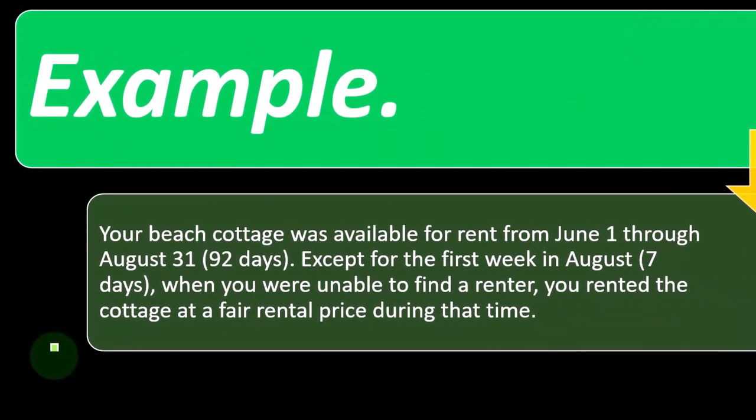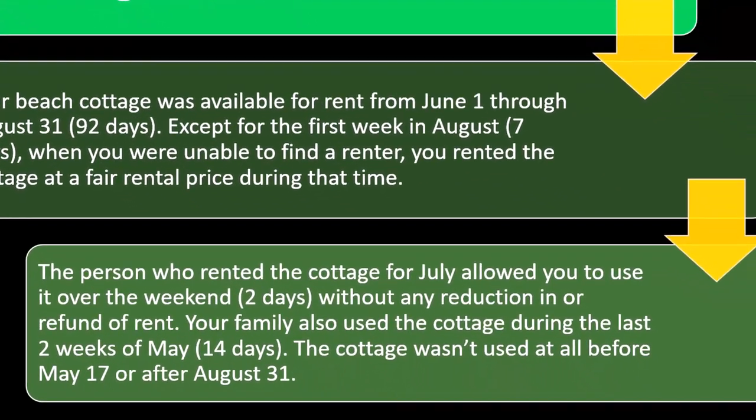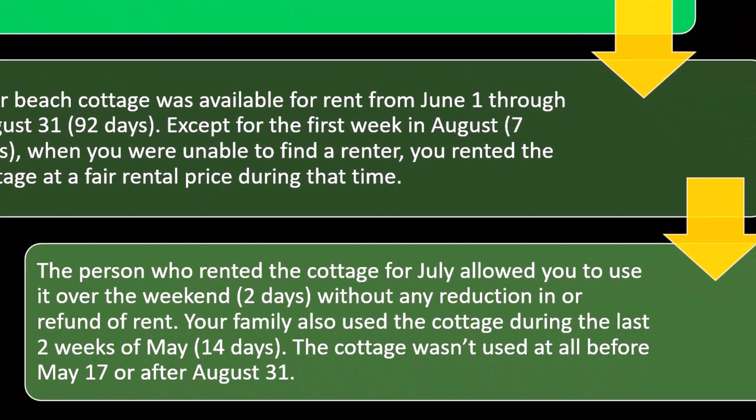Example: your beach cottage was available for rent from June 1st through August 31st — 92 days — except for the first week in August (seven days) when you were unable to find a renter. You rented the cottage at a fair rental price during that time. The person who rented the cottage for July allowed you to use it over the weekend — two days — without any reduction in or refund of rent. Your family also used the cottage during the last two weeks of May — 14 days. The cottage wasn't used at all before May 17 or after August 31st.